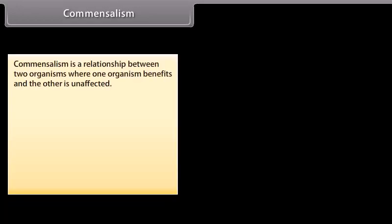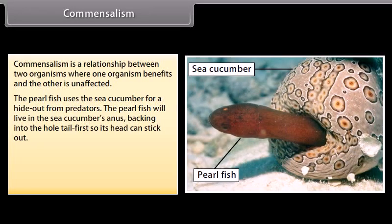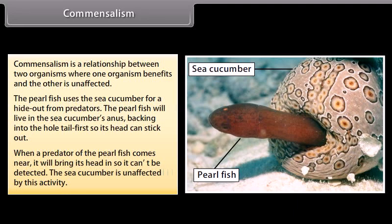Commensalism is a relationship between two organisms where one organism benefits and the other is unaffected. For example, the pearlfish uses the sea cucumber as a hideout from predators. The pearlfish lives in the sea cucumber's anus, backing in tail first so its head can stick out. When a predator comes near, it brings its head in so it cannot be detected. The sea cucumber is unaffected by this activity.